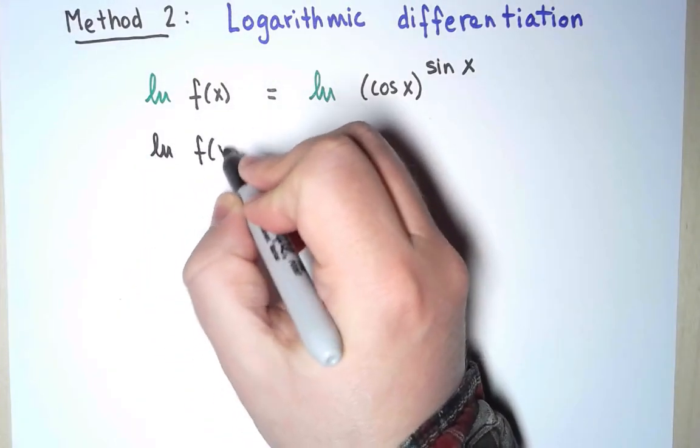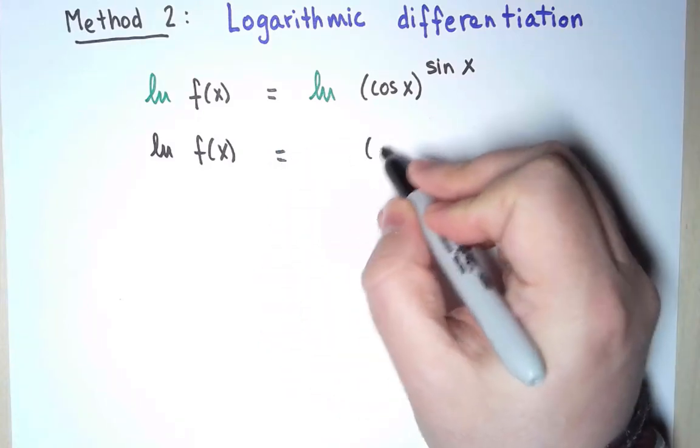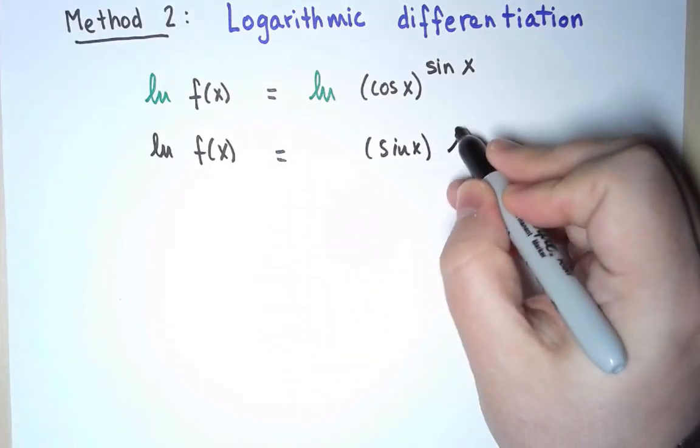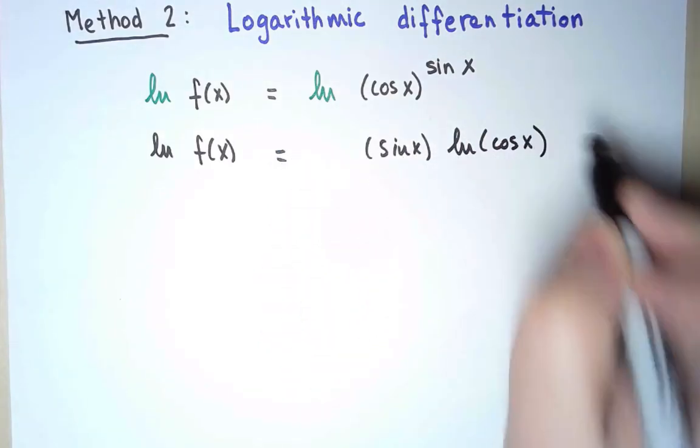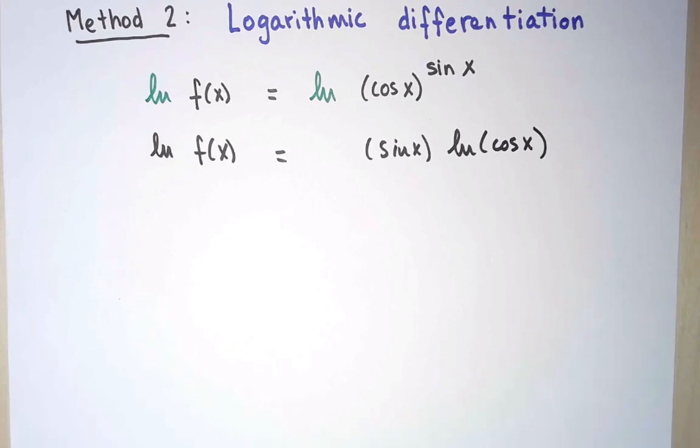So using the properties of logarithms, I can rewrite this as ln(f) = sin x · ln(cos x). And look, the exponent has disappeared entirely. Now that the exponent is gone, I can take derivatives of both sides much more easily.